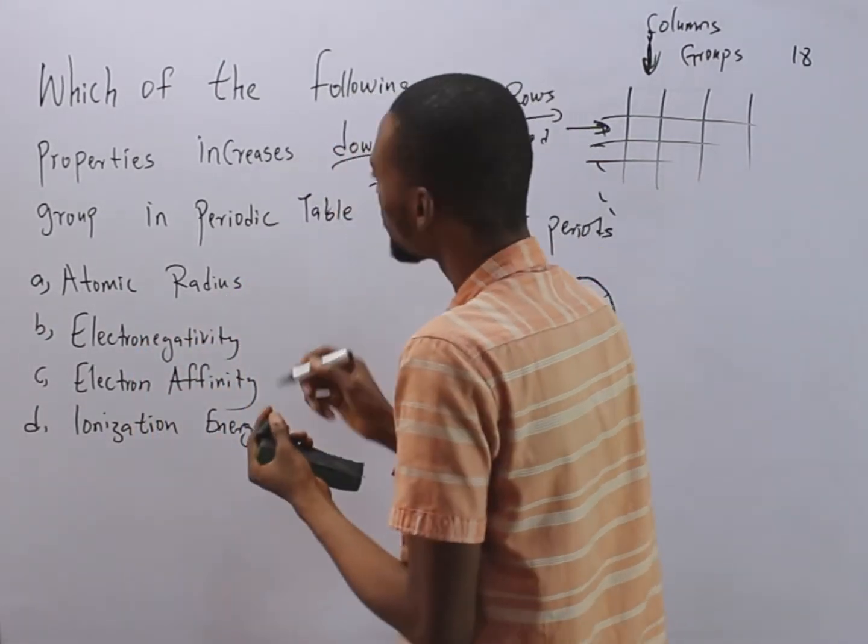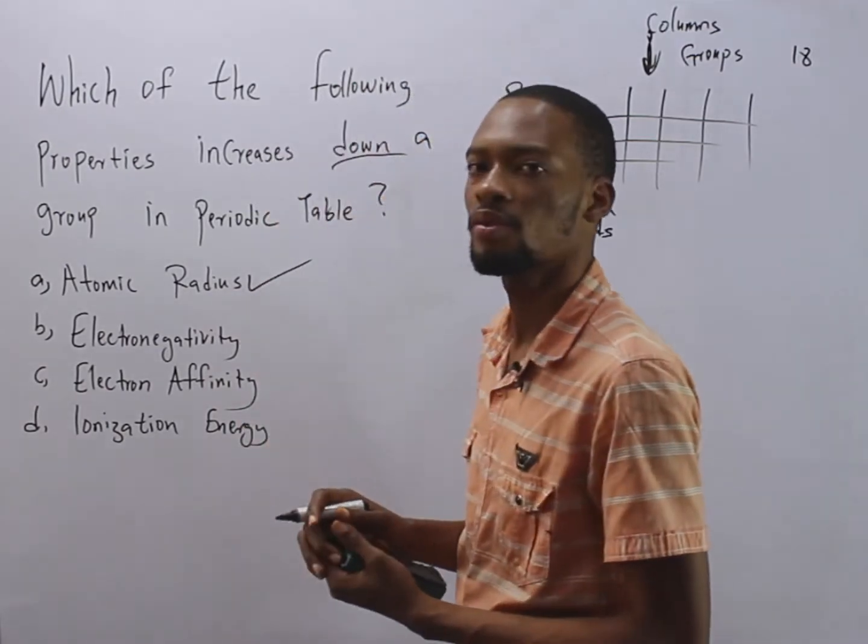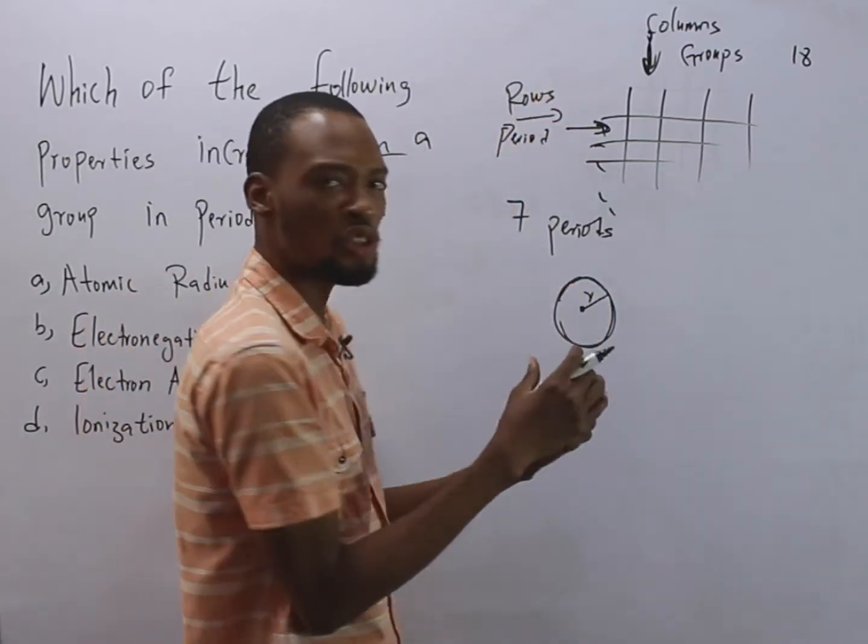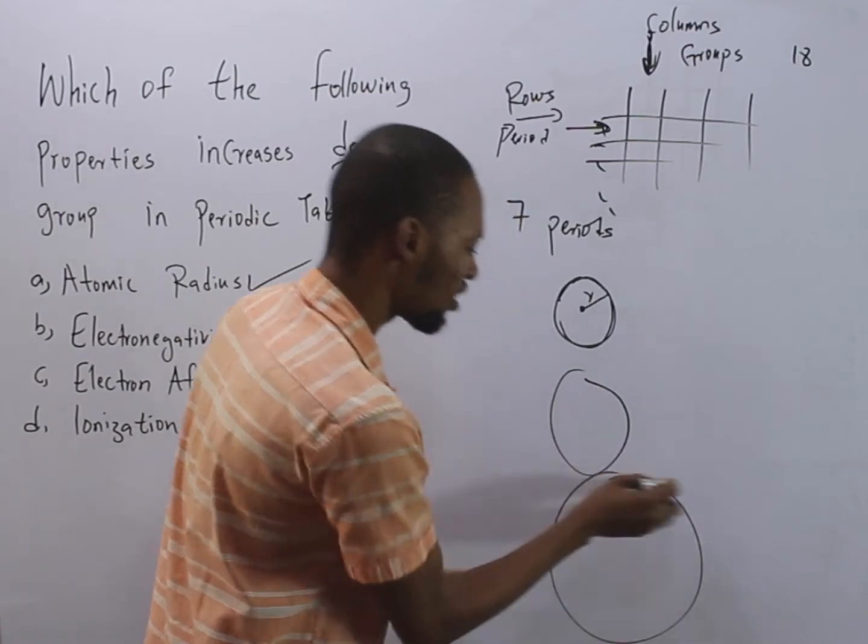Now, down a group, atomic radius increases down a group. So as we go down the group, the size of the atom increases. It goes larger.